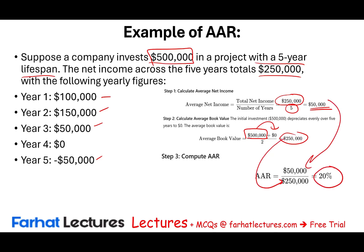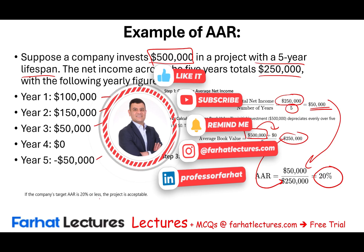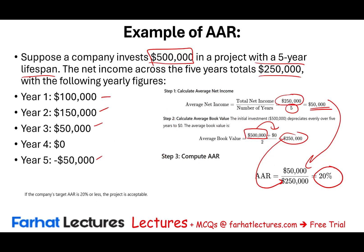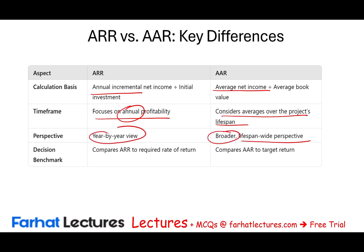Taking $50,000 divided by $250,000, the AAR is 20%. Do we accept or reject? It all depends on the company's acceptable target rate — is 20% acceptable or not? To summarize: ARR uses incremental net income per year focused on annual profitability, while AAR uses average net income over the life of the project considering its full lifespan. ARR is compared to the required rate of return; AAR is compared to a target rate.